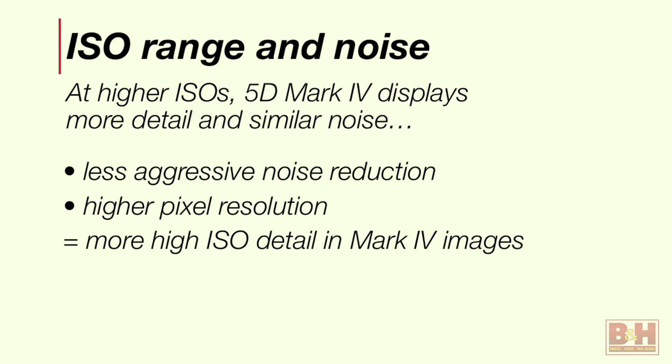When you bring the ISOs even higher, you start to see some interesting things. There's less noise reduction on the 5D Mark IV in terms of what goes on in-camera, and you have higher pixel resolution so there's more detail. The absolute noise level remains pretty similar between the two. But starting at ISOs like 25,000 and above, you start to see a difference. Even at the extreme of 102,000 ISO, it's a lot nicer than what the 5D Mark III could do at those expanded settings.